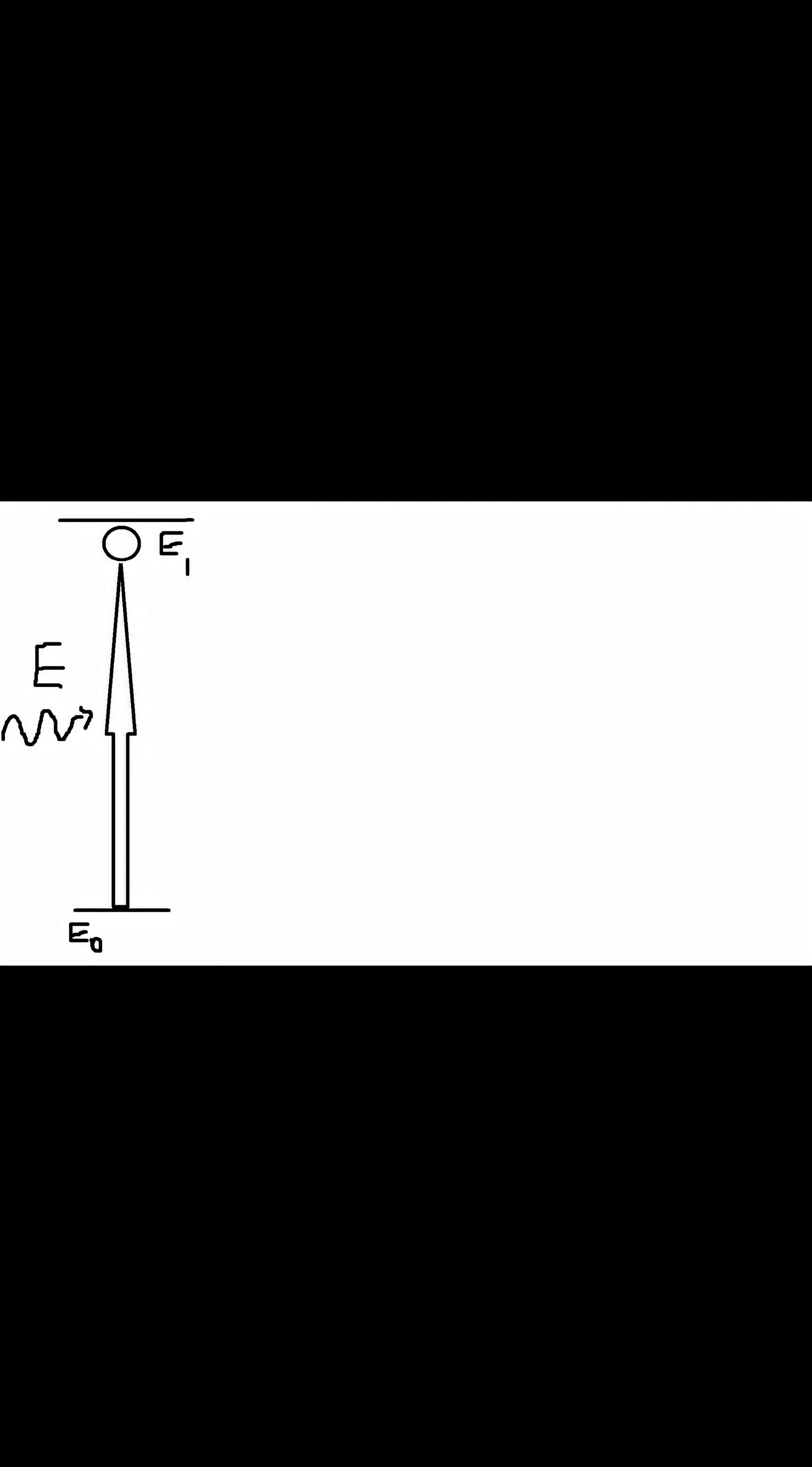Here I have a diagram of what happens to an atom in the steps of stimulated emission. In this diagram, E0 is the ground state, or the normal state. E1 is the excited state. Remember that now.